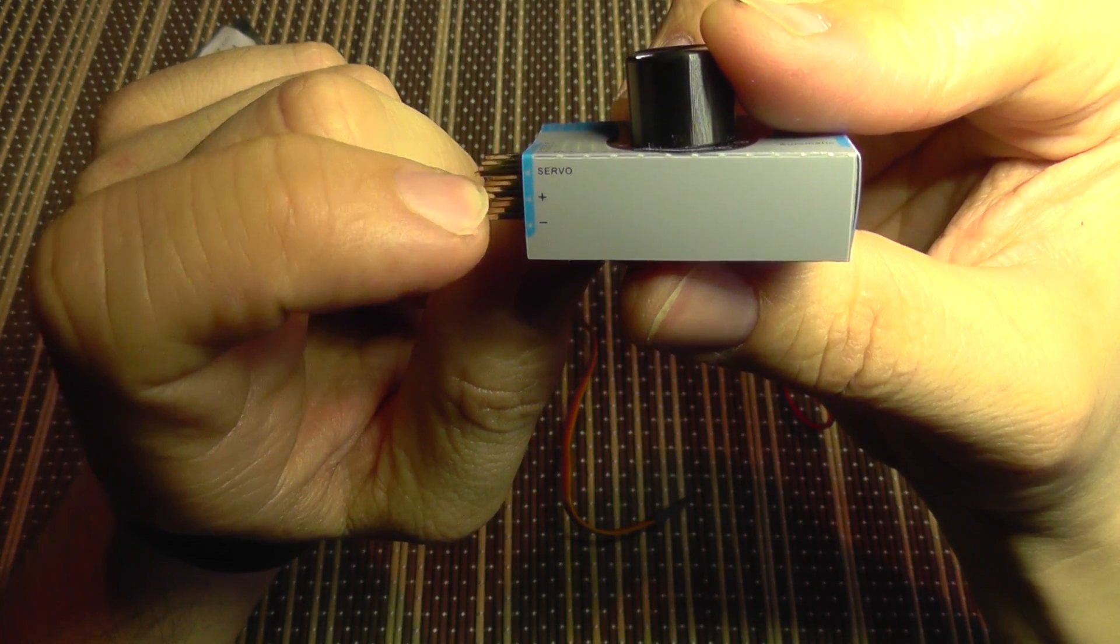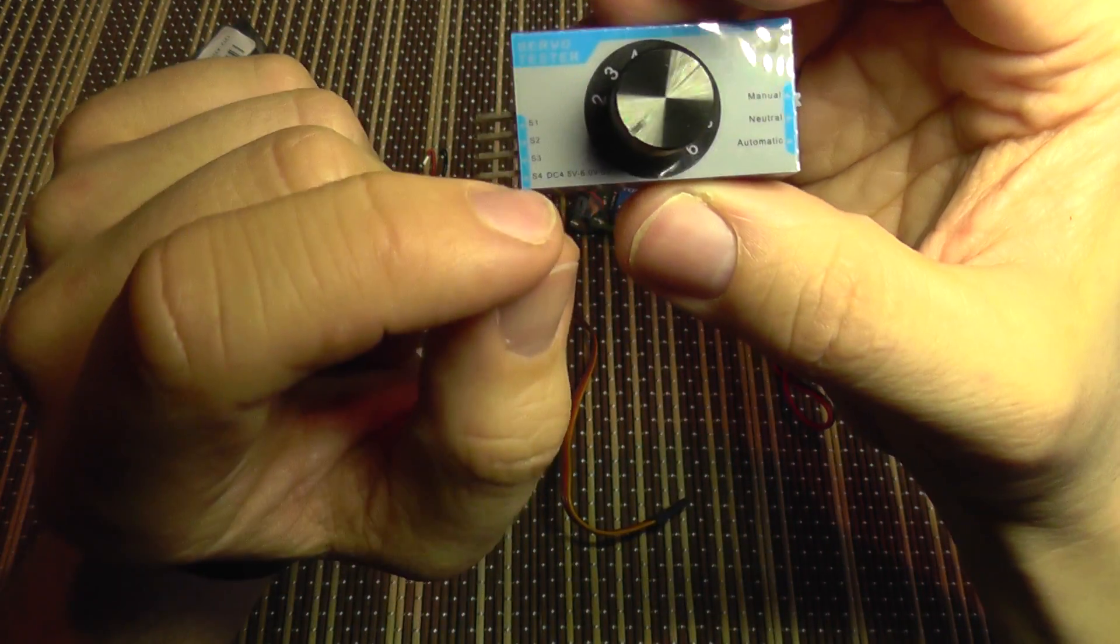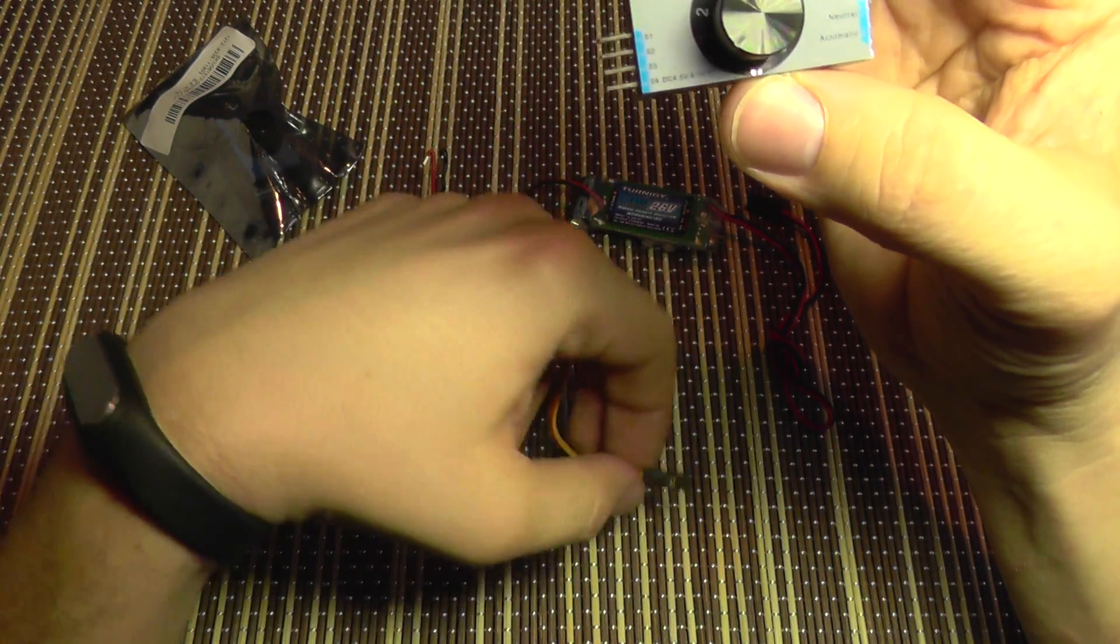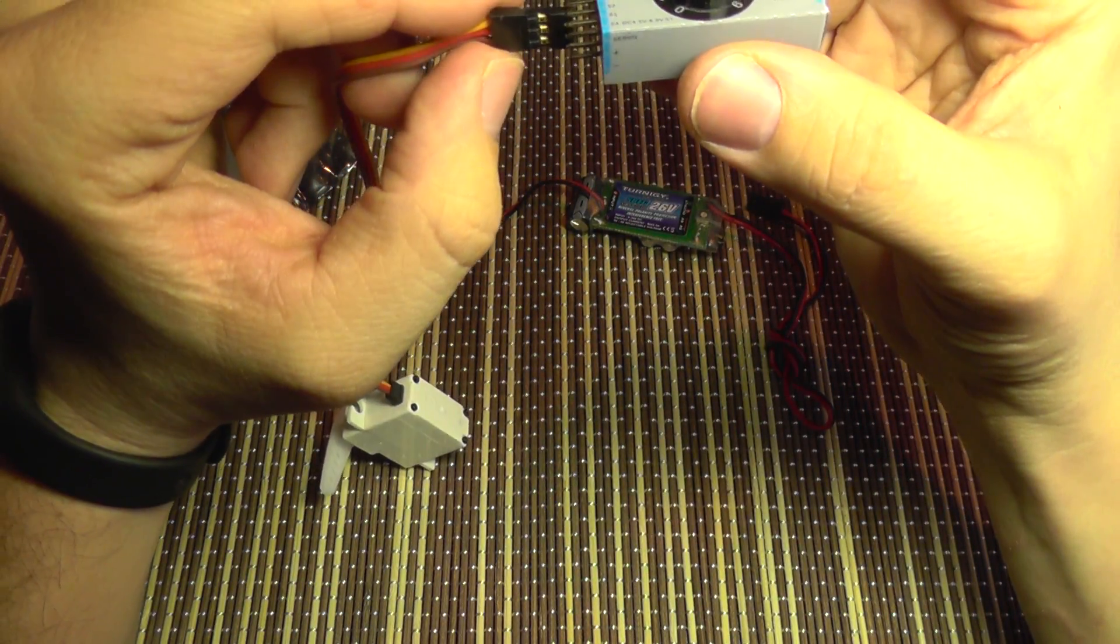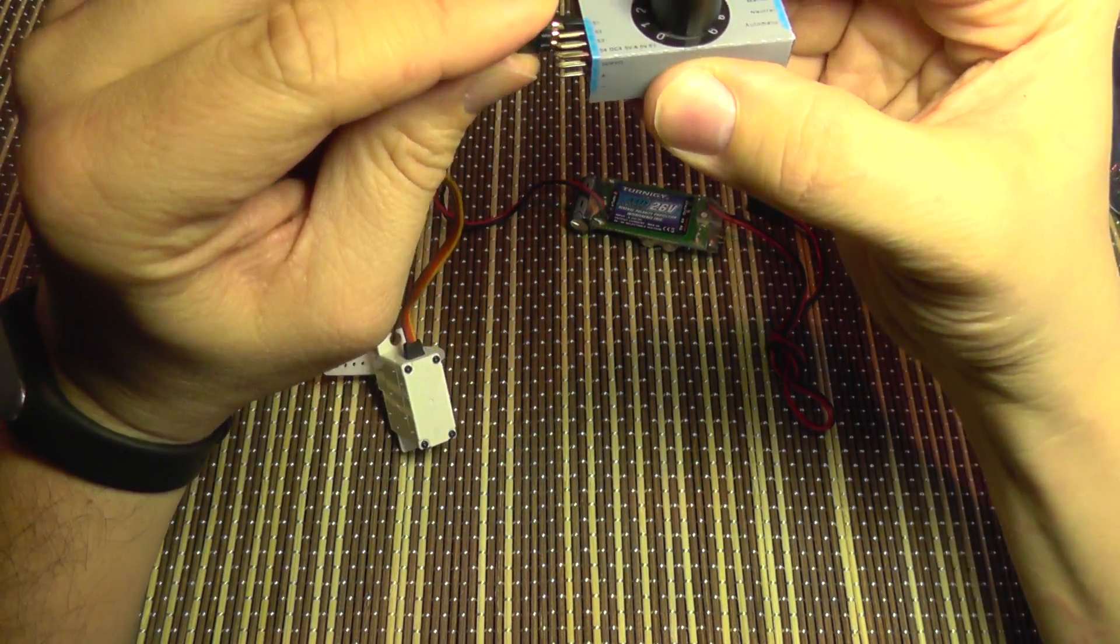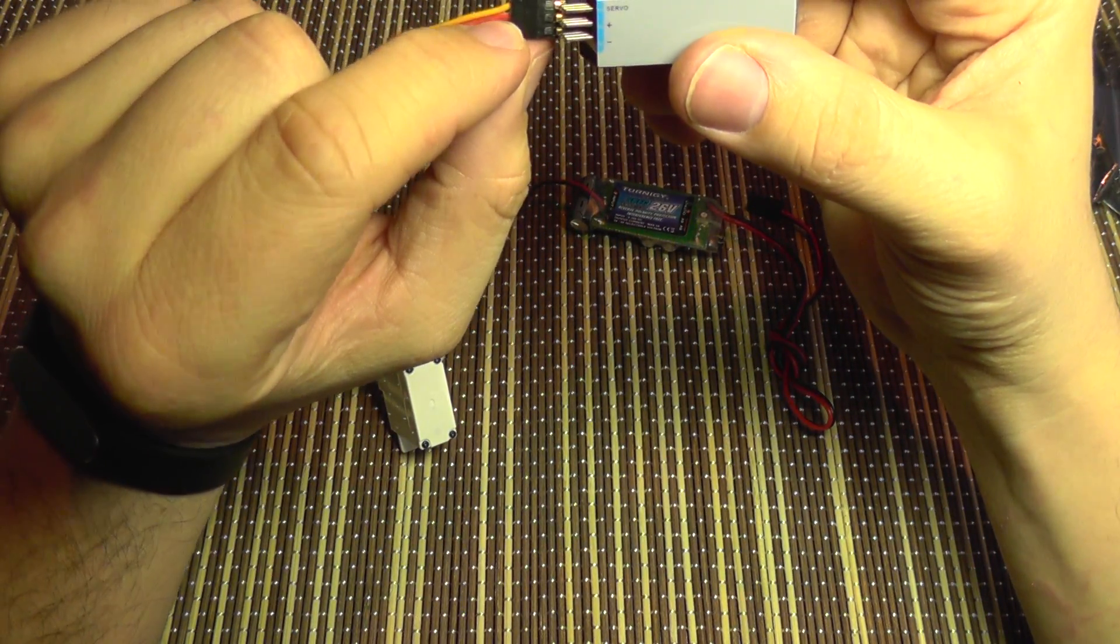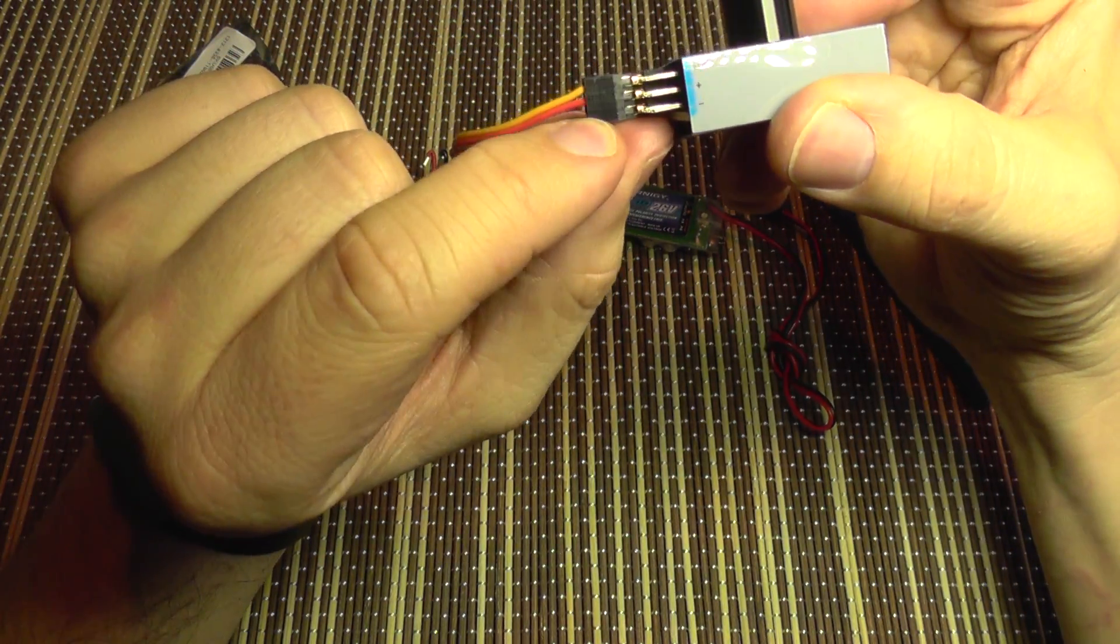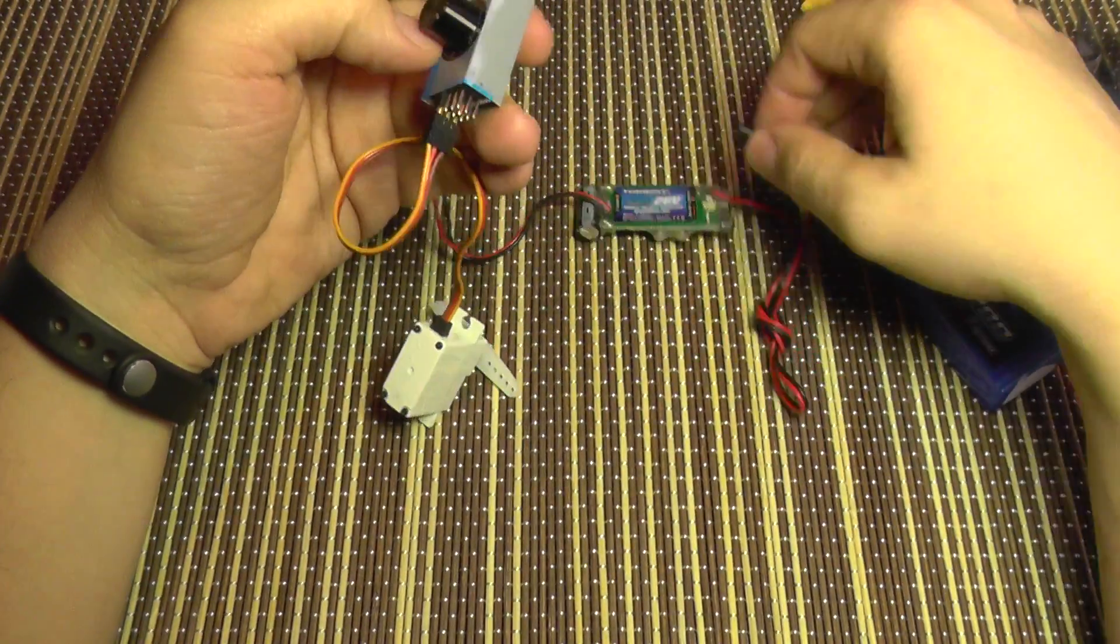It has plus, minus, and servo connections. This is servo 4, servo 3, servo 2, and servo 1. I'm going to connect servo 1 with the servo wire - signal on top, plus in the middle, and negative on the bottom part of the connector. Power will go here.